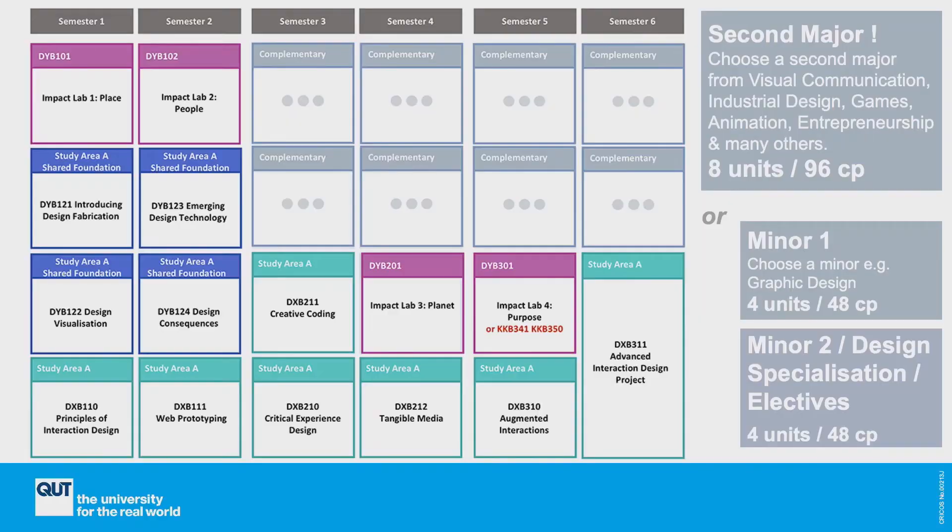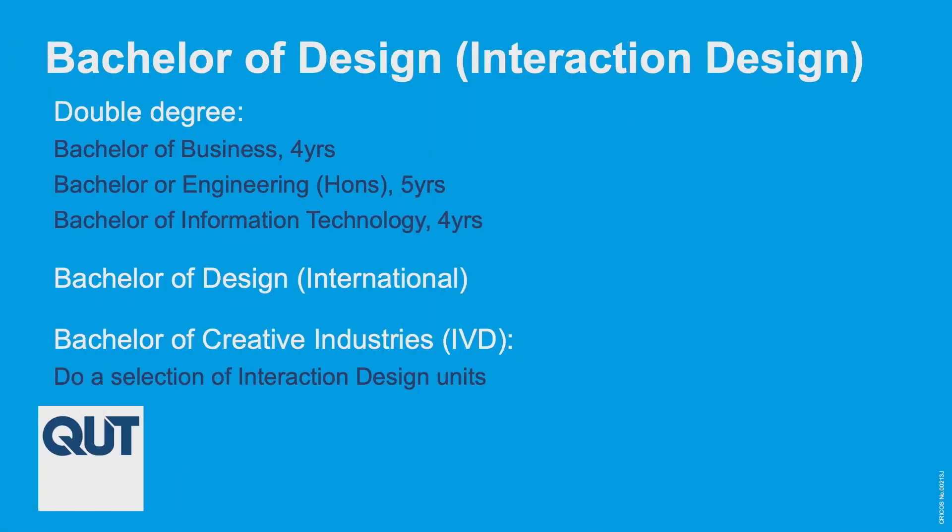The Bachelor of Design in Interaction Design is a three-year degree, full-time. We also have double degree options with Business, Engineering and IT. Then there's the B Design International, which is a four-year degree with a year overseas. And the Bachelor of Creative Industries in Interactive and Visual Design — these BCI IVD students do a selection of Interaction Design units, as well as some from Visual Communication, kind of like a joint Interaction Design and Visual Communication major.